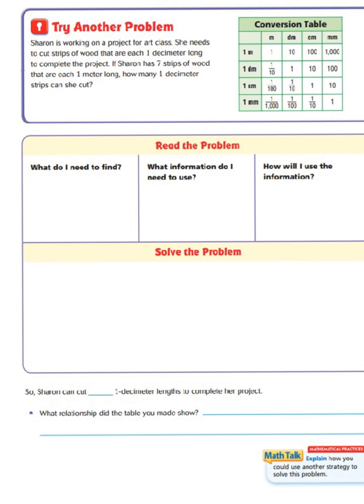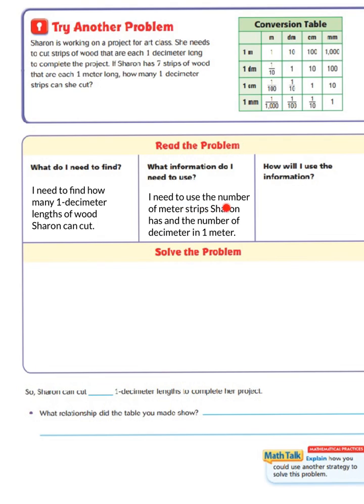So, we need to begin with finding out, what do I need to find? Well, I need to find how many one decimeter lengths of wood Sharon can cut. So, what information do I need to use? Well, we have to look back up here and find our key information. And we know that I need to use the number of meter strips Sharon has and the number of decimeters in one meter.